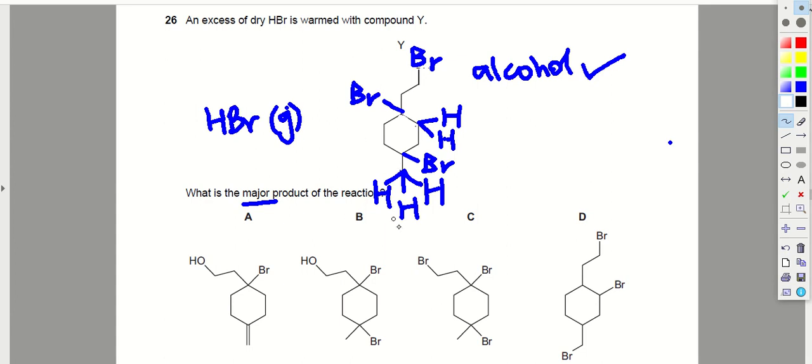All right, so this will be the final product that we should get if Y is warmed with excess HBr. Now, let's look at A, B, C, and D. Are we trying to match the structure that I have just drawn?